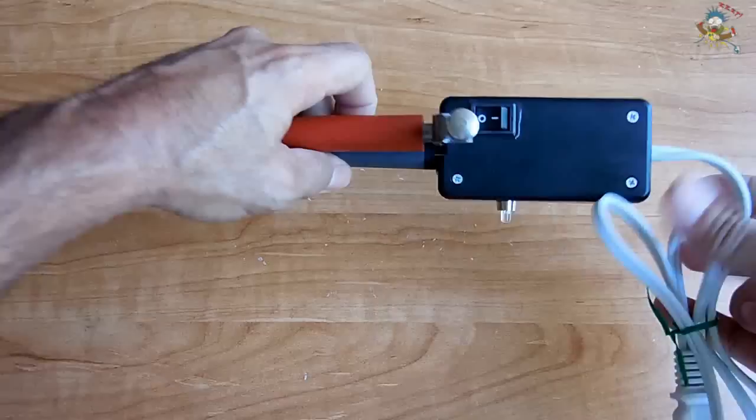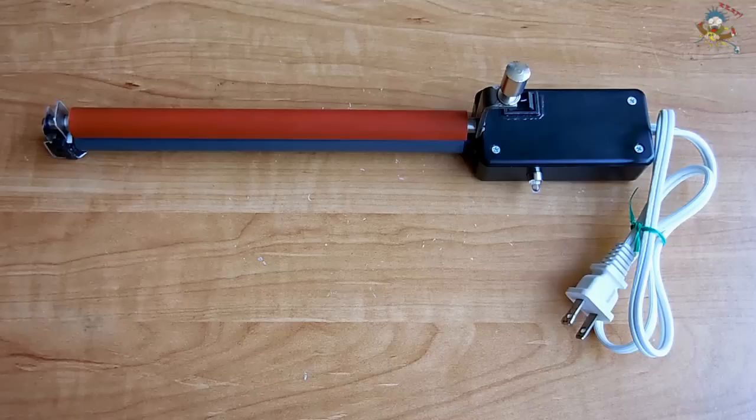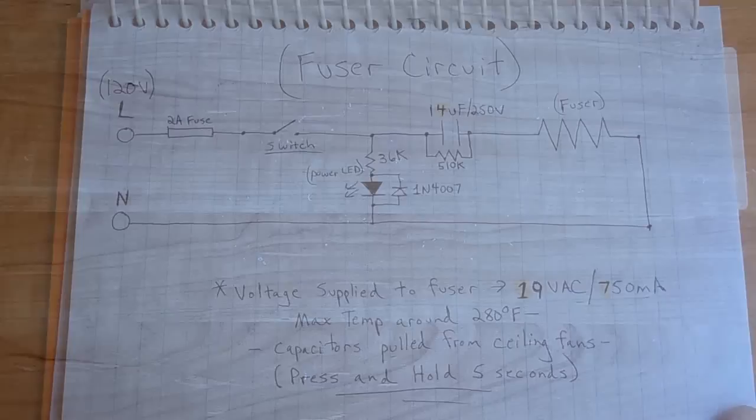And I also added this little plate. The reason for that plate is to keep the handle nice and straight. Without this plate on the end, the handle would not stay in the upright position. It may flop all the way to the side. I'm going to take this out of the way now. I'm going to show you the schematic, what I did.